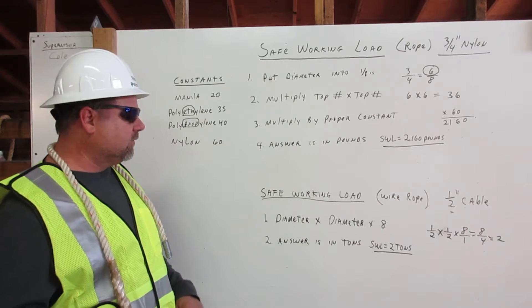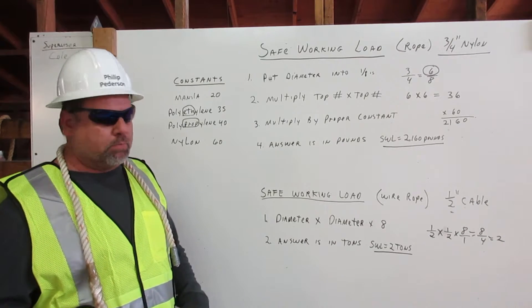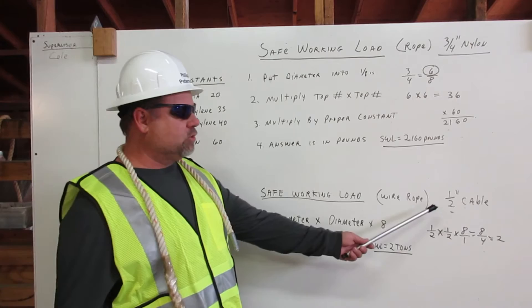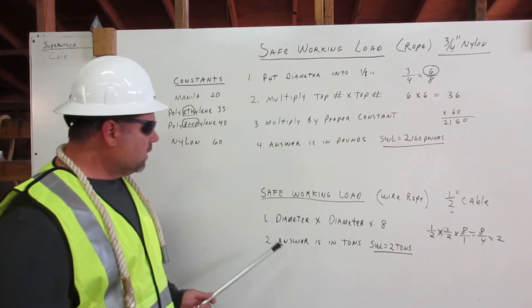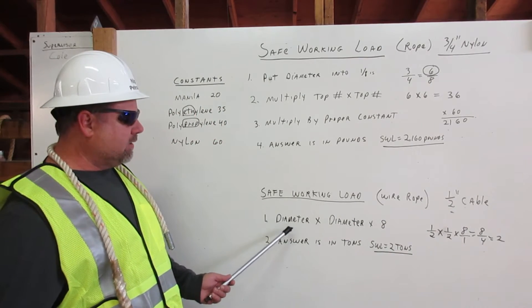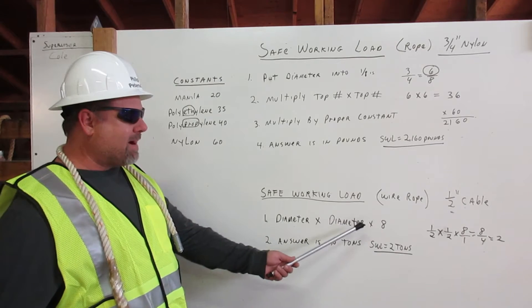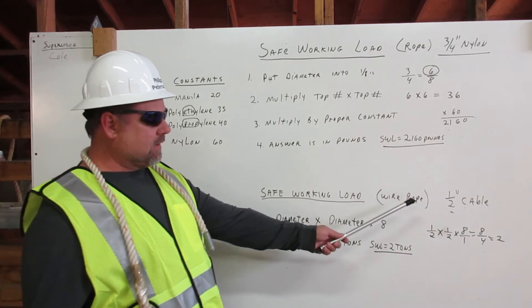Now let's discuss the safe working load for wire rope. In this example, we'll use a half-inch cable. Number one, we multiply the diameter by the diameter by eight.